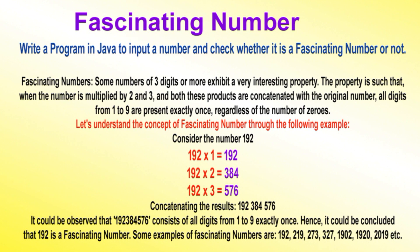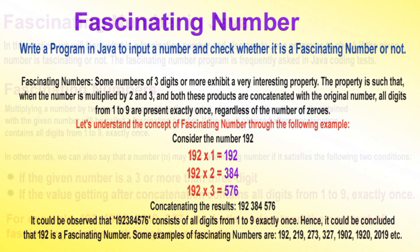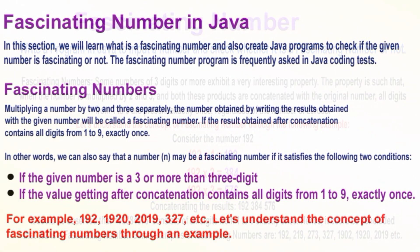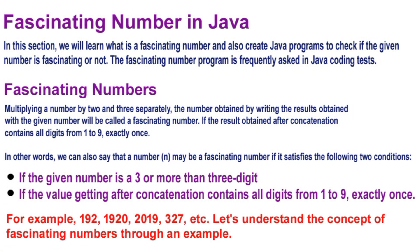Consider the number 192. 192 multiplied by 1 is 192. 192 multiplied by 2 is equal to 384, and 192 multiplied by 3 is equal to 576. So concatenating the results: 192, 384, 576. This shows that 192 is a fascinating number, as the concatenation consists of all digits from 1 to 9 exactly once.